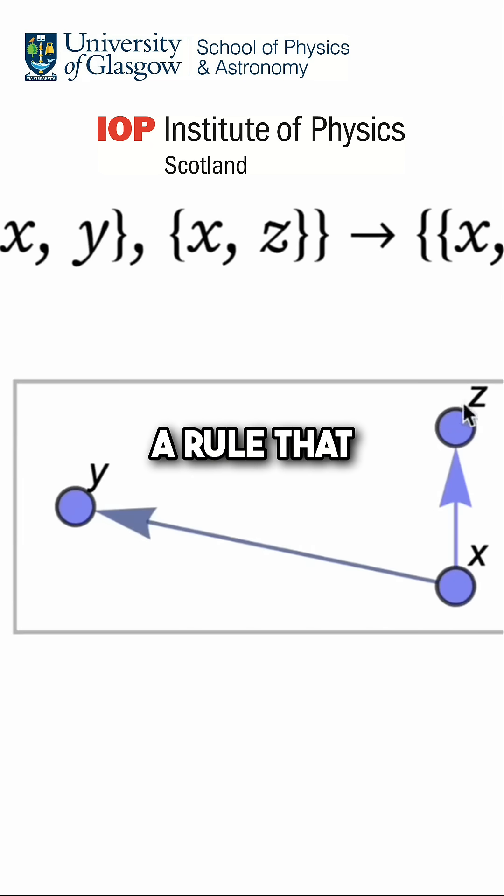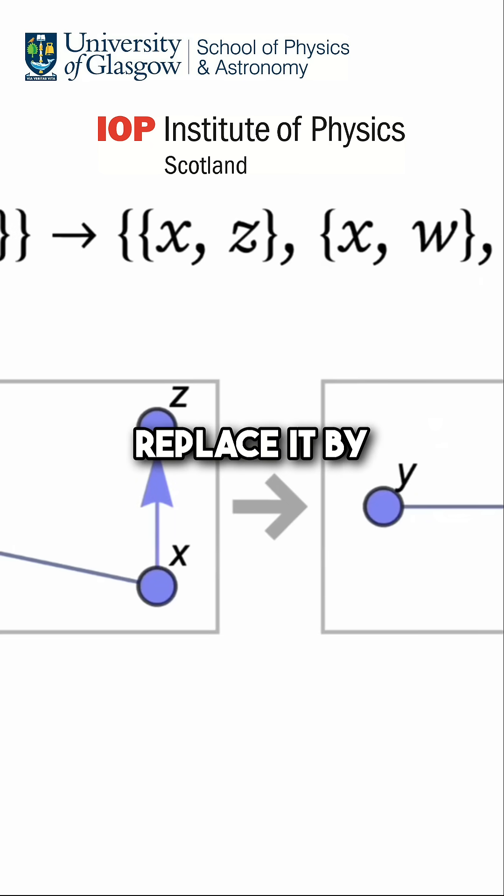Like, for example, this might be the rule, a rule that says, if you see a piece of network that looks like this, replace it by one that looks like that.